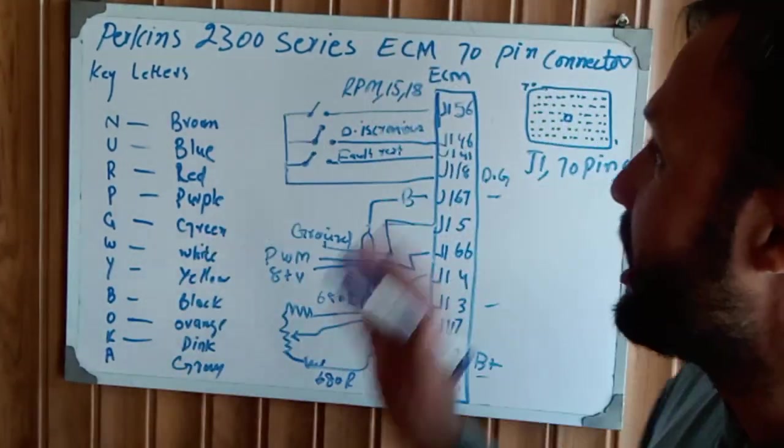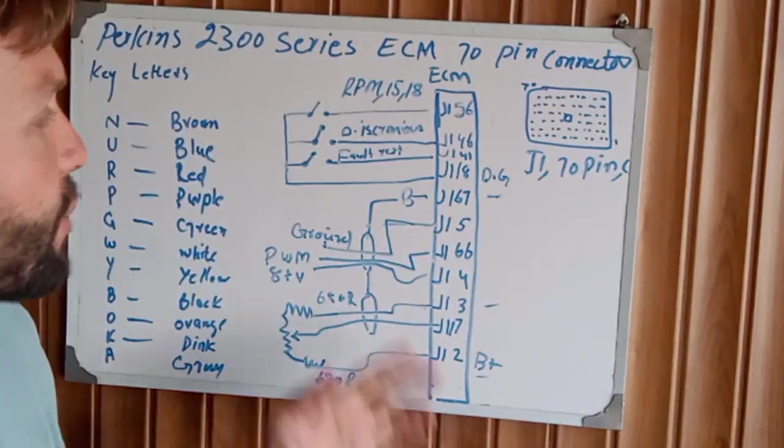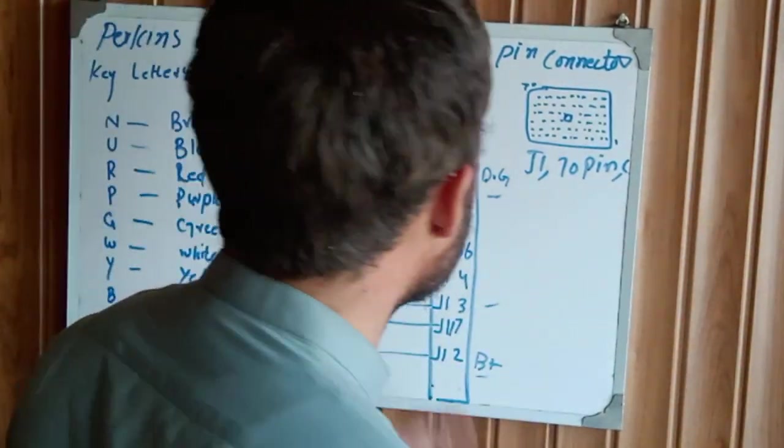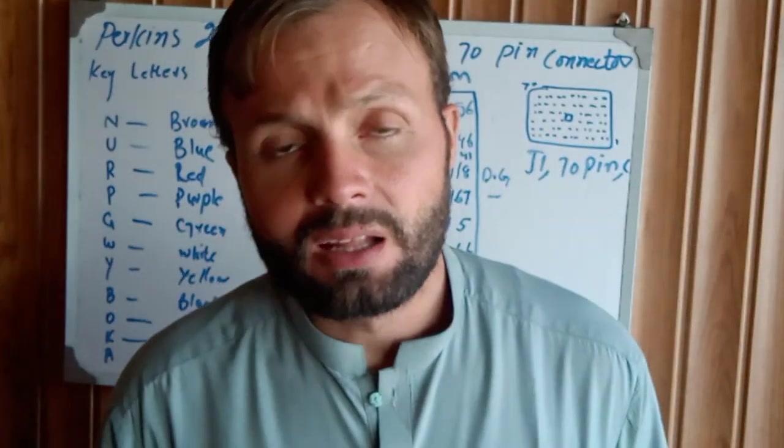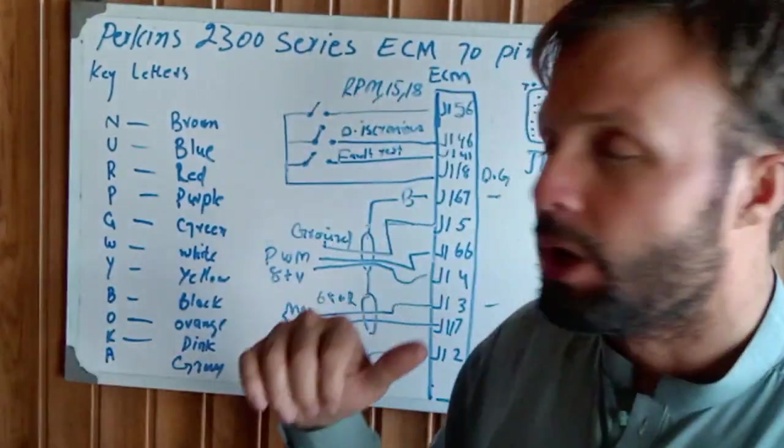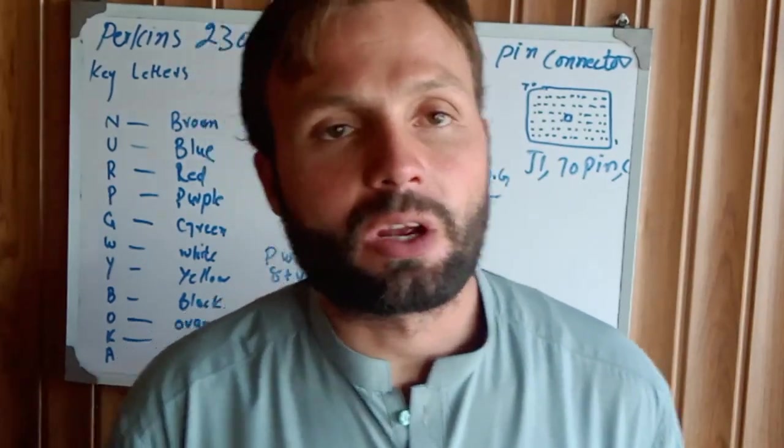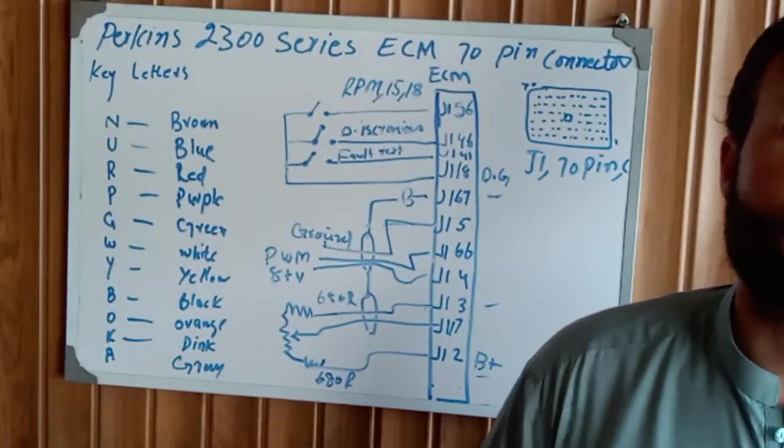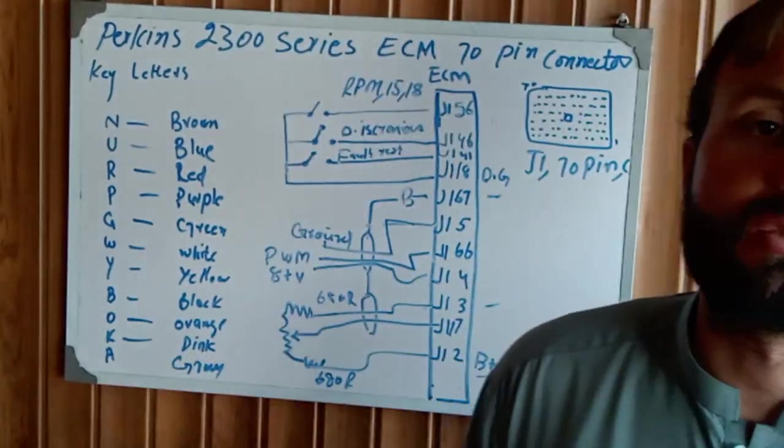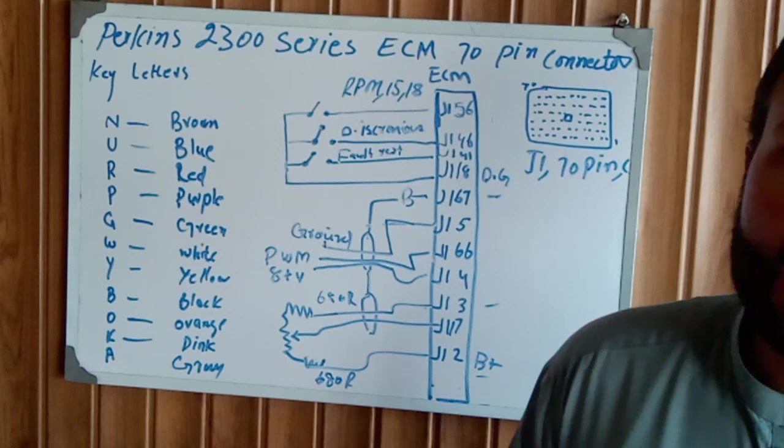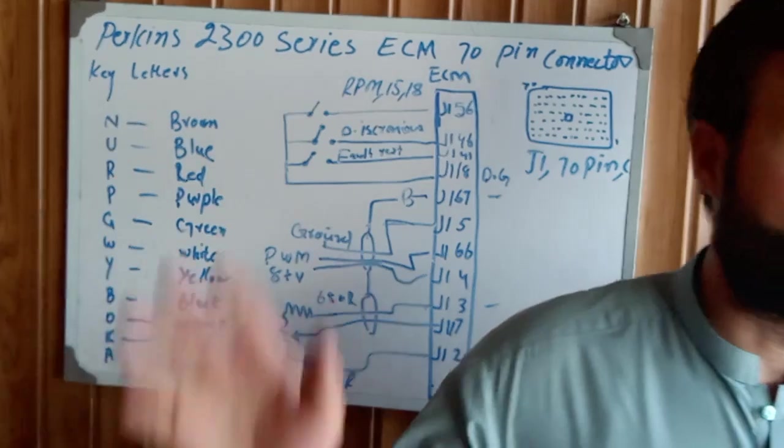This is the second part of the Perkins 2300 Series ECM 70-pin connector wiring, so I hope you understand the wiring. In the next new videos, I'll explain the remaining pins of the 70-pin connector. I hope you understand completely. Listen carefully to understand the Perkins 2300 Series complete ECM wiring 70-pin connector. I hope you watch my complete videos. See you all next time and goodbye.